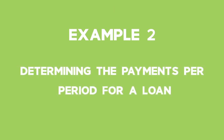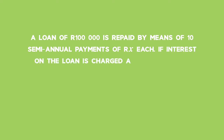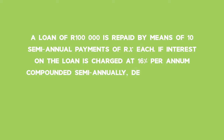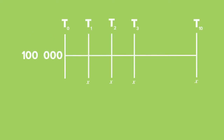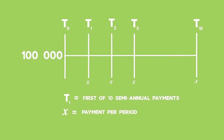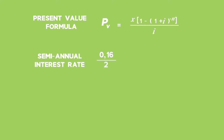Example 2: Determining the payments per period for a loan. A loan of R100,000 is repaid by means of 10 semi-annual payments of x rand each. If interest on the loan is charged at 16% per annum compounded semi-annually, determine x if the first payment is made at the end of the first half-year. The semi-annual interest rate to use is 16% in decimal form divided by 2, which gives us 0.08.